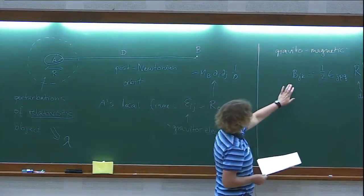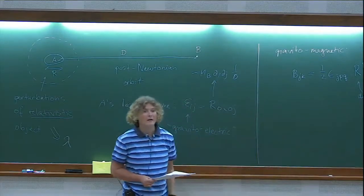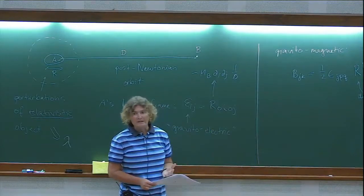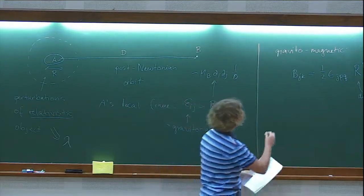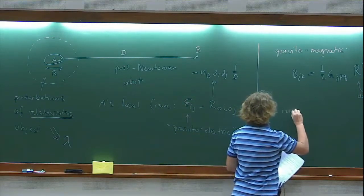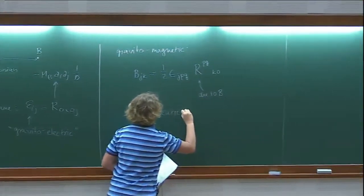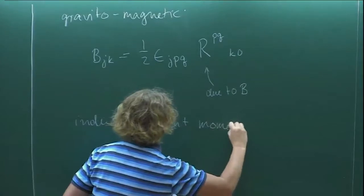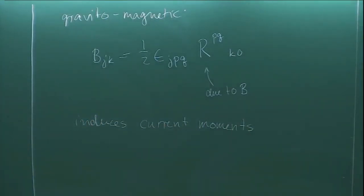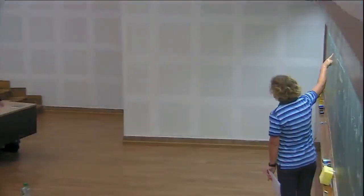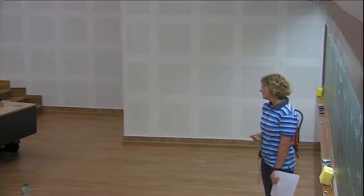This curvature tensor is due to the companion body B, as we showed — the tidal moments are only from the other body. In the Newtonian case this was minus m_B d_i d_j (1/r). This gravitomagnetic effect is new in GR with no Newtonian analog, and it will induce current moments in the star — instead of couplings like q·e, you could have a current moment coupled to the gravitomagnetic field.